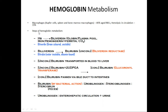Hemoglobin within the macrophages is converted into heme and globin. The globin goes back into general circulation for reuse. Heme will be acted upon by heme oxygenase, which will convert it into biliverdin. Biliverdin is a green-colored pigment and it is unstable. Biliverdin will be acted on by biliverdin reductase, which will convert it into unconjugated bilirubin. This unconjugated bilirubin is water-insoluble and albumin-bound, and is transported from the macrophages into the blood, then via blood to the liver for conjugation.